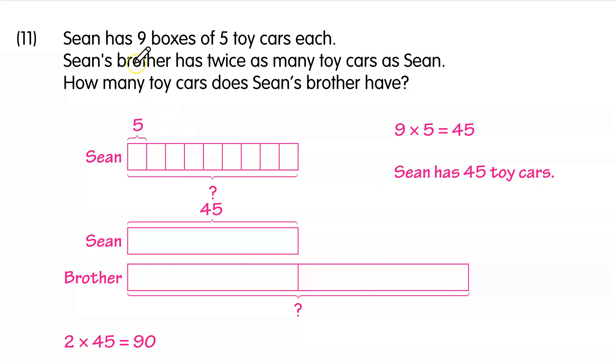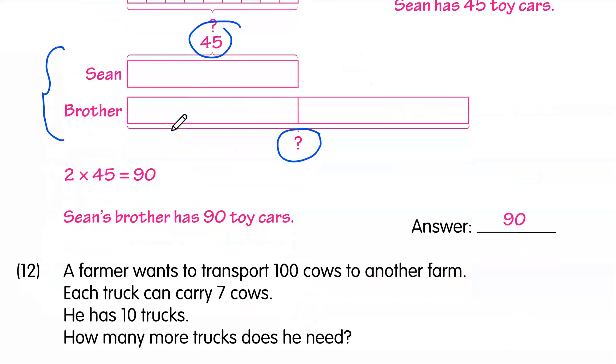Question 11. Sean has 9 boxes of 5 toy cars each. Inside a box there are 5 toy cars. Sean's brother has twice as many toy cars as Sean. First of all, you find how many cars does Sean have. 9 boxes, 5 cars total, Sean has 45. We get into another set of models showing that Sean has 45. The brother, twice, the brother has 2 times. This is Sean, this is the brothers, 2 times, which is 90.